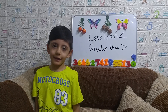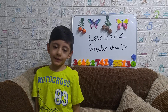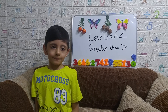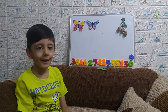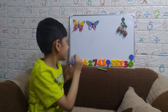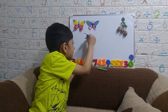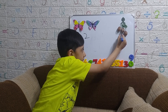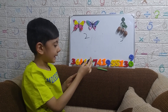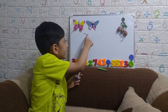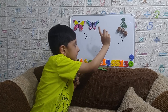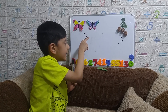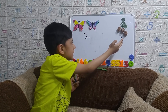Assalamu alaikum! Today I am doing a maths activity with greater than and less than. Let's start. I have two butterflies here and three walnuts. Two is less than three — two is less than, and three is greater than two.